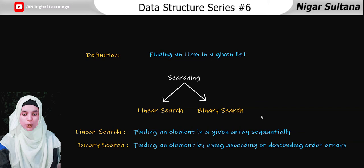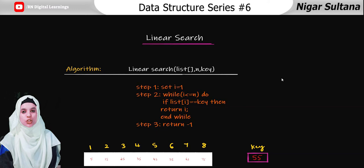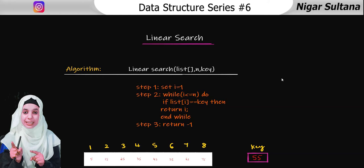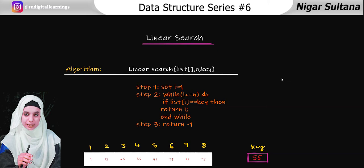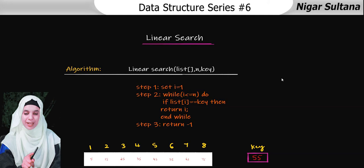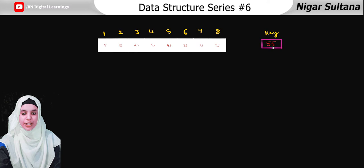Linear search is a process of finding an item in a linear way. It is the simplest technique of searching. We start searching from the beginning of the list. We take a key and start comparing from the first element. We compare the key with the first element — if it is equal we return the location or index; if not equal, we move to the next element.